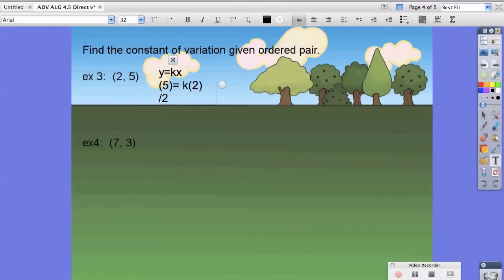So, since we're solving for k, we're going to divide by 2 to both sides. And find that k is equal to 5 halves.